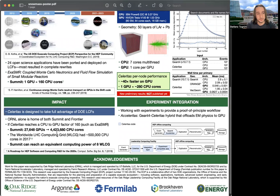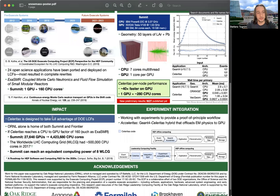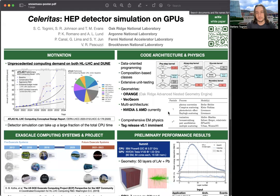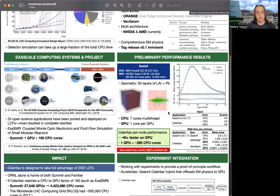Now to take full advantage of DOE supercomputers, which are mostly GPU-based, we had to design Celeritas from scratch. And now we have a fairly comprehensive EM physics for electrons, positrons, and photons in place. And even though we are still developing the code and there is a long way to go, here's a sneak peek on our preliminary test results on Summit. We have looked at using this simple geometry here.